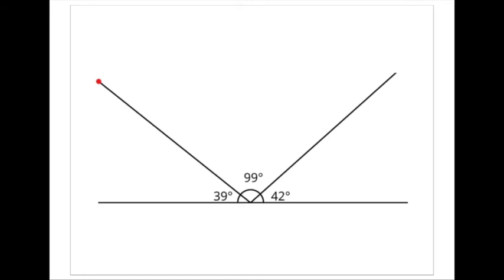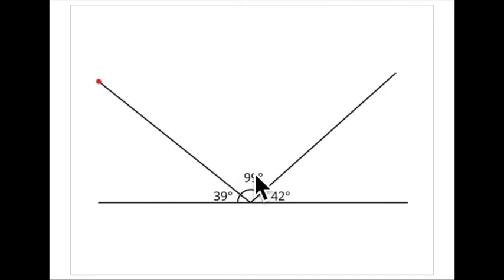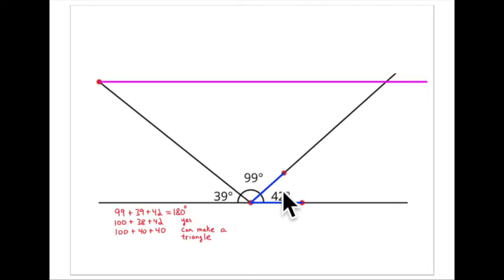This is practice problem number four from lesson two. They ask: a line has been partitioned into three angles — can you make a triangle from these three angles? Of course you can, because the angles of a triangle add to 180 degrees. These three angles add to 180 degrees because they lie along a straight line. Let's do this systematically.